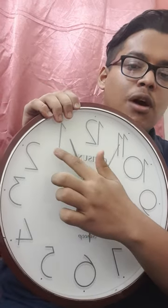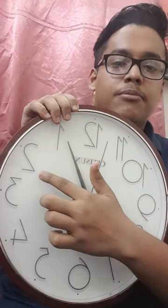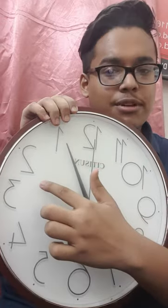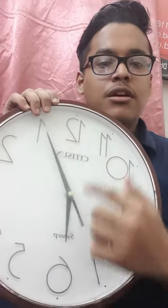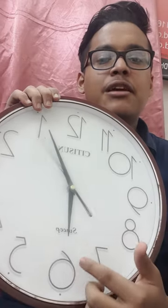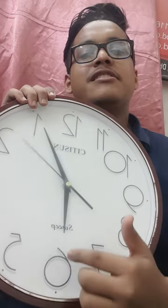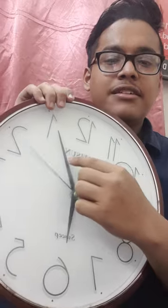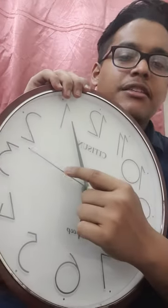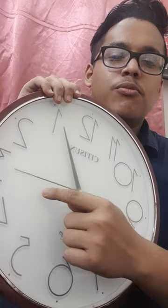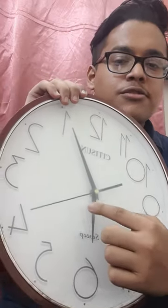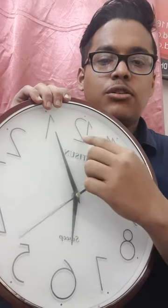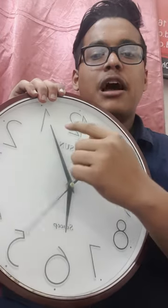As soon as the longer hand crosses from one number to another, it means that we have passed five minutes. As soon as it crosses from 1 to 12, the smaller hand automatically moves from one number to the next, indicating the hour. The longer hand moves only when the longest hand completes a full round, and when the longer hand crosses 12 full rounds, one hour has passed.